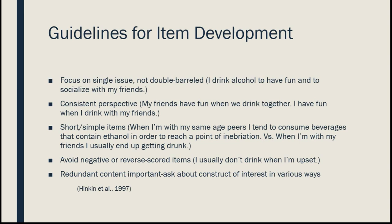What we do is develop a whole pool of items. If we want a 15 to 20 item scale, we might develop 30, 40, or 50 items, then pick the best ones. Before I get into how we pick the best items, let me give some guidelines for developing items. One important thing: our items should focus on a single construct or issue. We don't want double-barreled items.